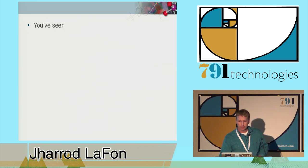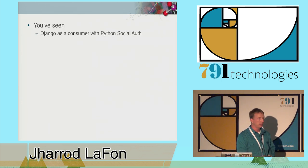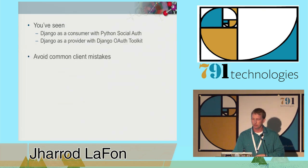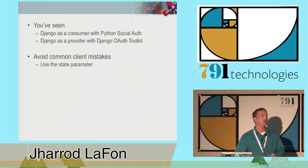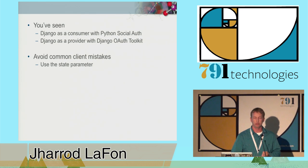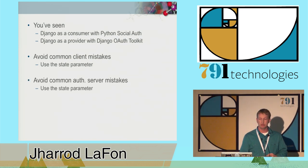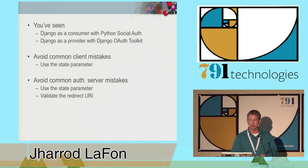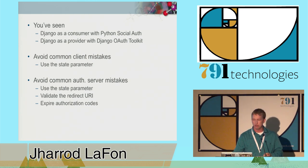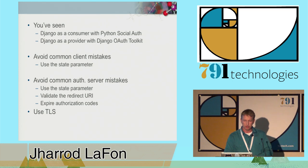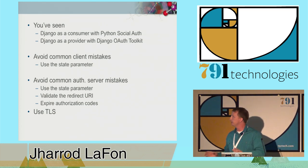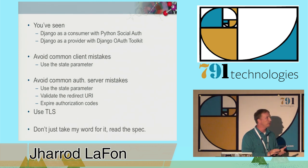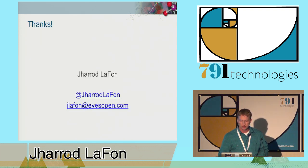So now you've seen Django as a consumer with Python Social Auth, Django as a provider using Django OAuth Toolkit, and some common mistakes to avoid. Always use a state parameter—even though it's optional, you should always use it. On the server, you need to always support it, and the server must always validate the redirect URI. The server needs to expire authorization codes. And most of all, everyone involved needs to use TLS. If this is the only slide you pay attention to, good—this is the one you need. But don't take my word for it—read the spec. Trust but verify. That concludes my talk. Thank you very much.